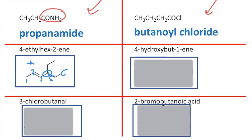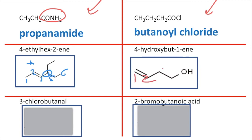Our next one is 4-hydroxybut-1-ene, so we've got two functional groups here: an alkene and an alcohol group. It's going to be a four carbon chain — one, two, three, four — and on carbon number four is your hydroxy group, while on carbon number one is your alkene.